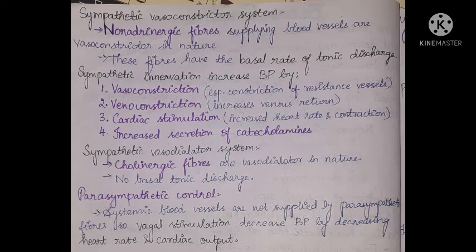Sympathetic innervation increases blood pressure by causing vasoconstriction, especially constriction of resistance vessels — the small vessels. Venoconstriction increases venous return to the heart. Cardiac stimulation increases heart rate and contraction, and there is increased secretion of catecholamines. Sympathetic vasodilator system: cholinergic fibers supplying blood vessels are vasodilatory in nature and do not have a basal tonic discharge.